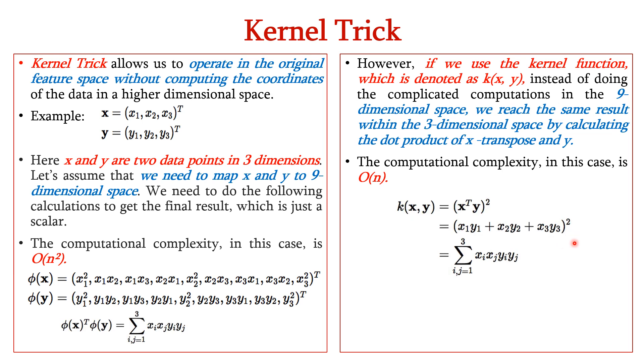This is three dimensional space and in short, we can represent it as xi·xj·yi·yj where j and i equals 1, 2, 3. The computational complexity in this case is O(n). So, that's the kernel trick: it offers a more efficient and less expensive way to transform the data into higher dimensions.